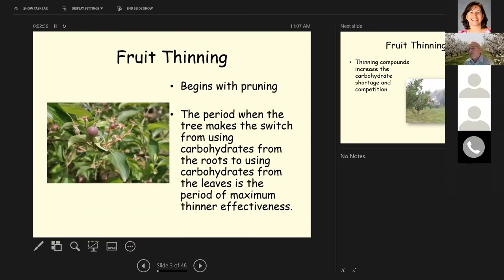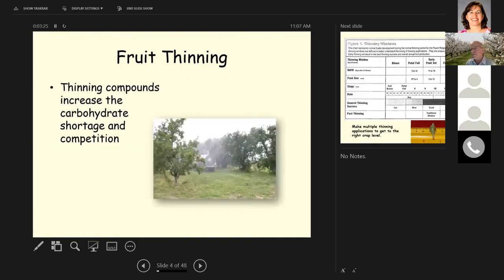Now chemical thinning works because there's a period between when the tree switches from using the carbohydrates that were stored in the roots last fall, and the new carbohydrates that are coming on in the spring as the leaves develop. Where this transition is taking place, there's a carbohydrate deficiency in the tree, and those fruit that don't get the carbohydrates or sugars and starches tend to drop off the trees.